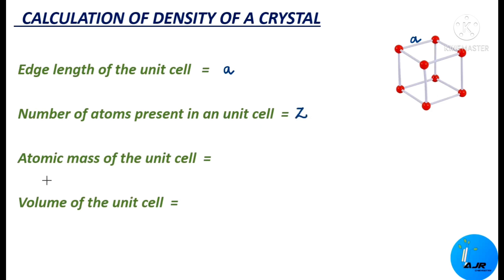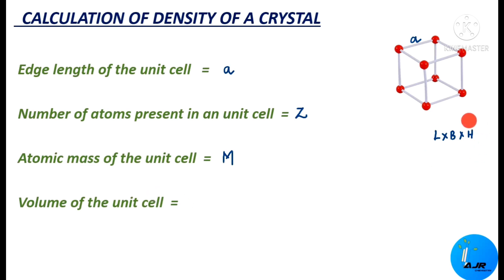Now let us consider the atomic mass of the unit cell. The atomic mass of this unit cell is considered as capital M. And the volume of the unit cell — volume is length into breadth into height. So for the volume of the unit cell the formula given is A cube, since we take into consideration the length, breadth, as well as height.